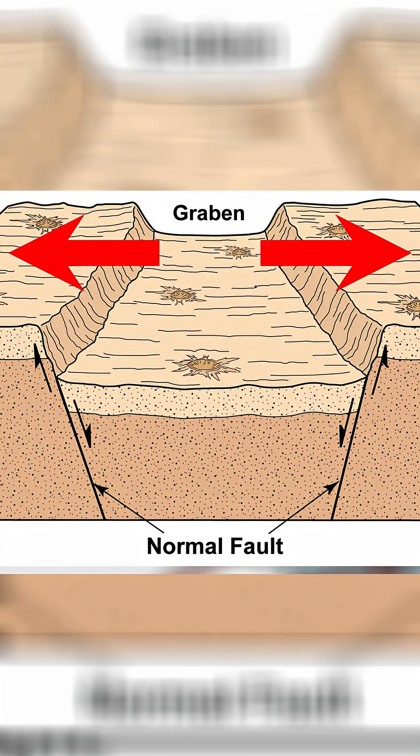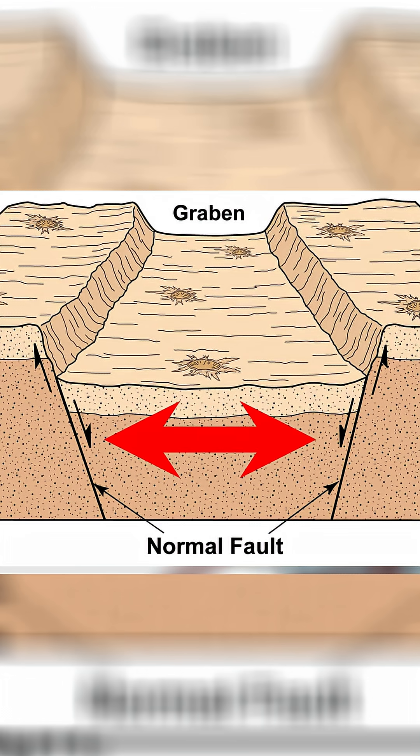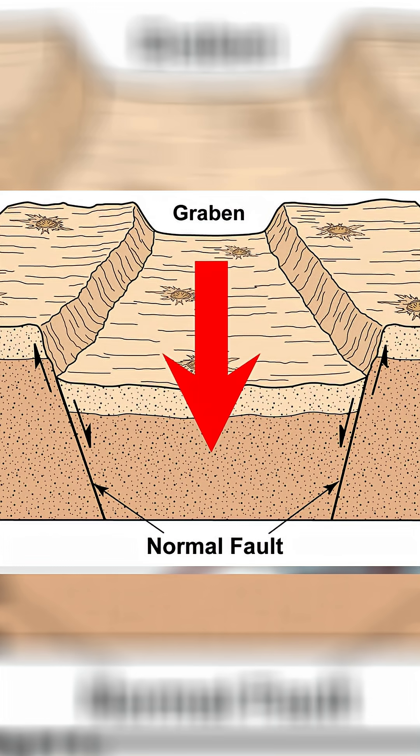Horsts and grabens are essentially when normal faulting happens in two different places. So again, the crust is being extended outwards, but this time two different weaknesses in the rock are exposed, causing one block of the crust to fall down compared to both sides around it. And this section of crust that has fallen is known as a graben.